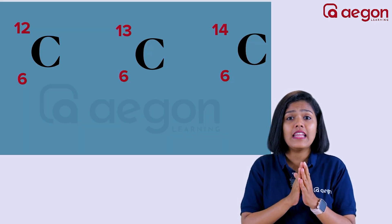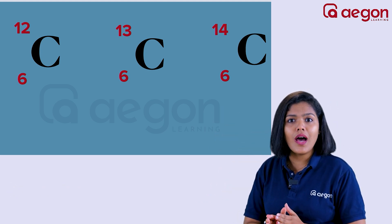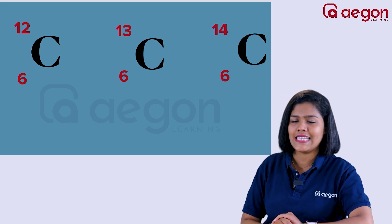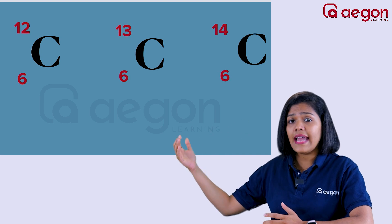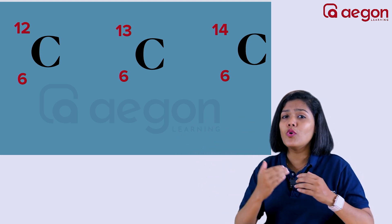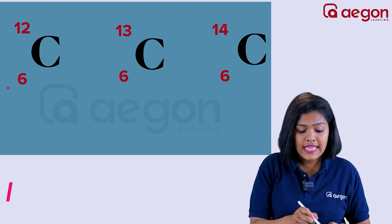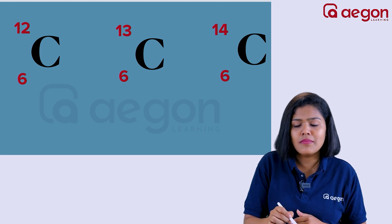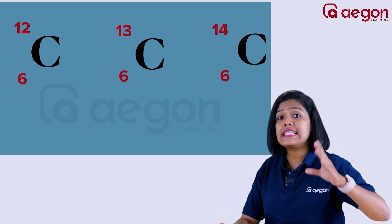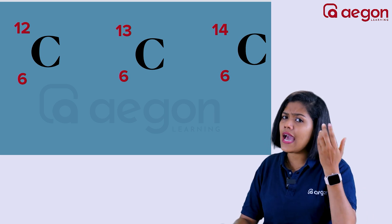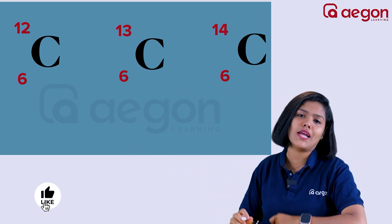So, isotopes — what is it? If you observe, three things are carbon atoms. You can observe that atomic number is the same but mass number is different. The atomic number is 6. The mass numbers are 12, 13, and 14. Atoms of the same element have the same atomic number but different mass numbers — these are known as isotopes.